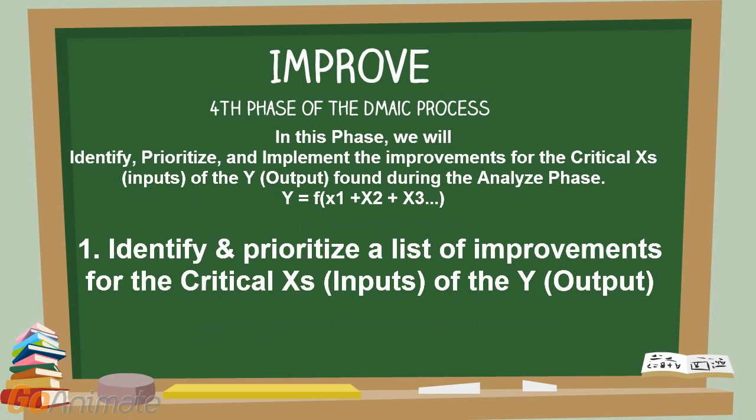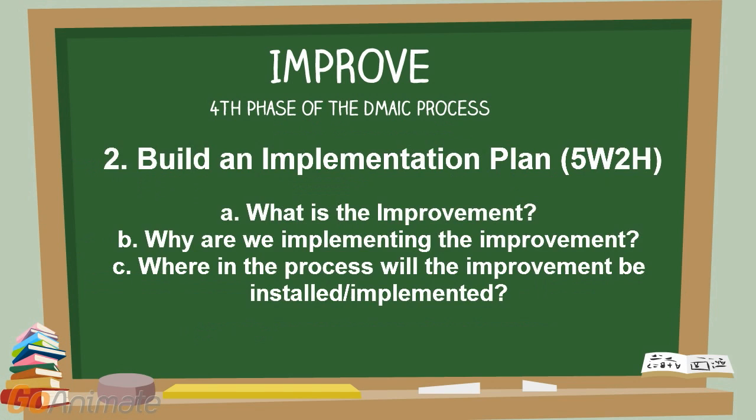Step 1: Identify and Prioritize. Use brainstorming to identify a list of improvements for the critical X's, and an impact effort matrix tool to prioritize the list of improvements.